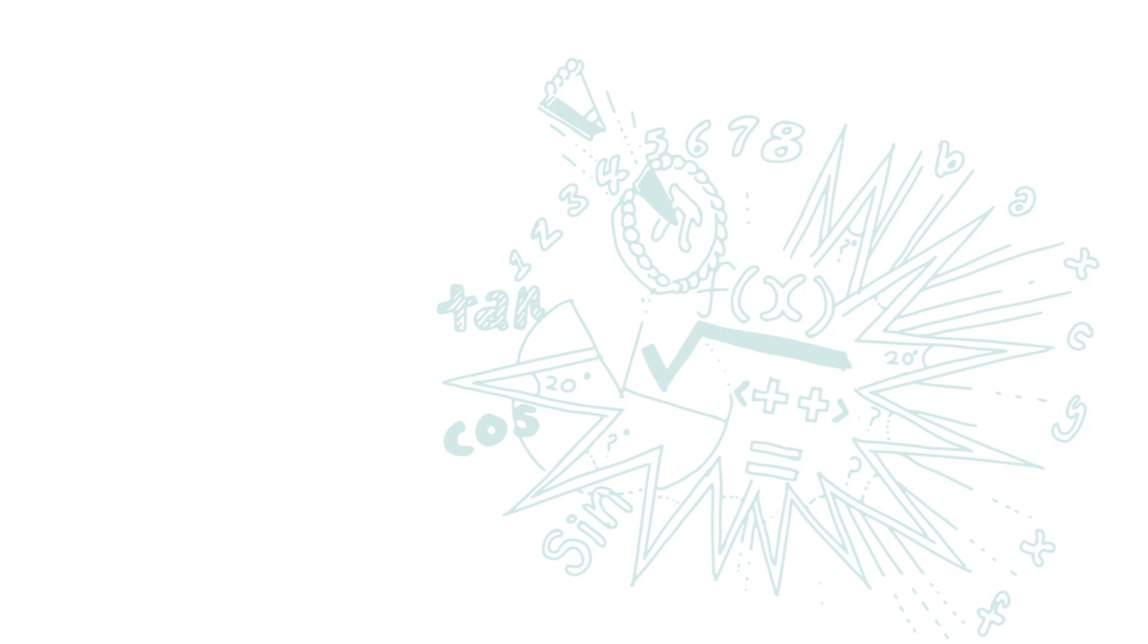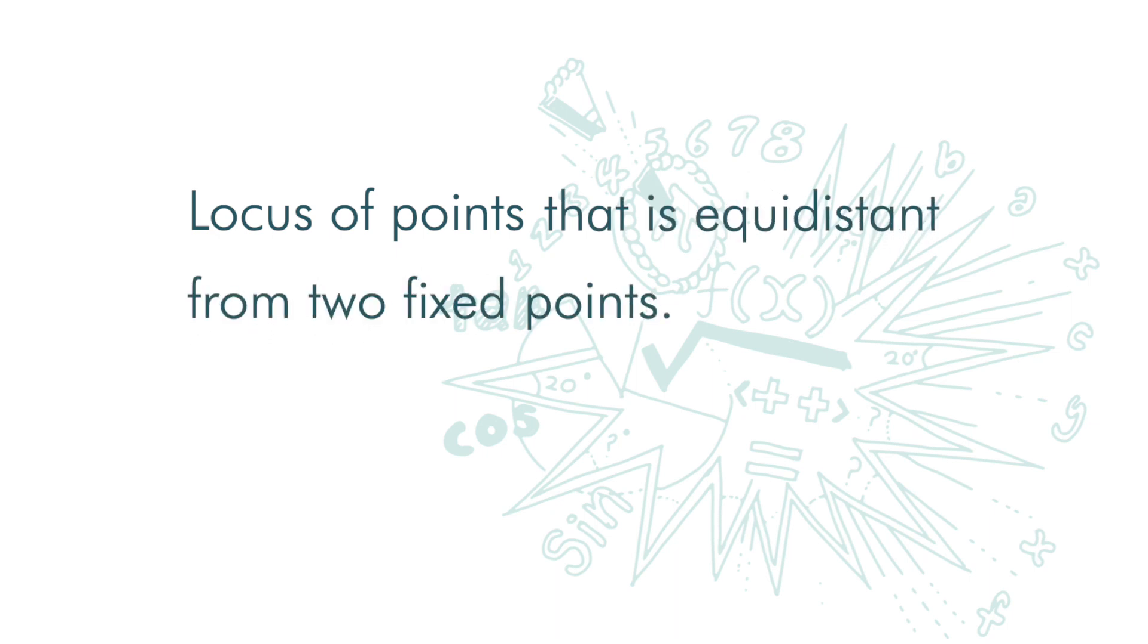Next, we are going to look at the locus of points that is equidistant from two fixed points. Equidistant means equal in distance. Let's look at this example.